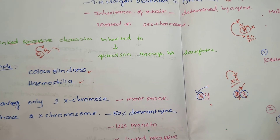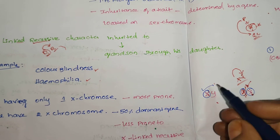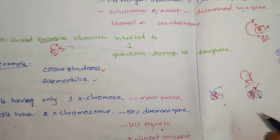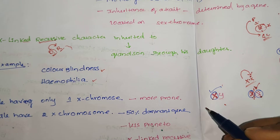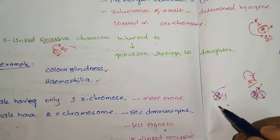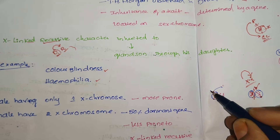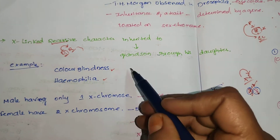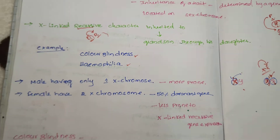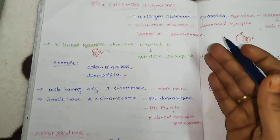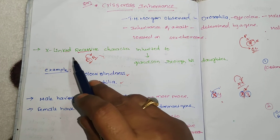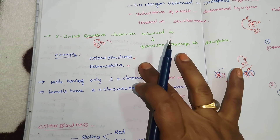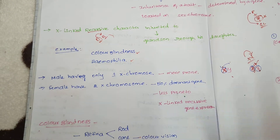Females are therefore very less prone to the disorder. But in males, there is only one X chromosome, so there is no other X chromosome to dominate the recessive character. The gene is expressed directly, which is why males are very much prone to hemophilia and color blindness. Hemophilia and color blindness are the classic examples of crisscross inheritance, and they are X-linked recessive disorders.